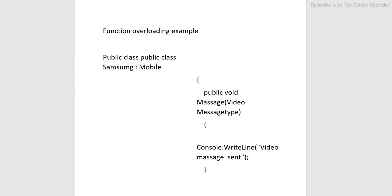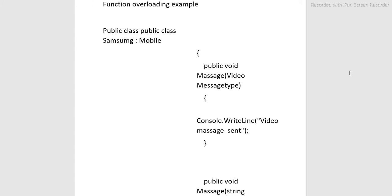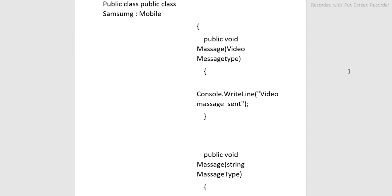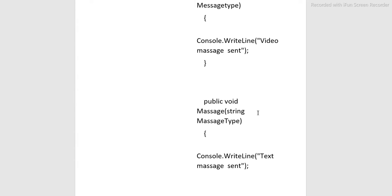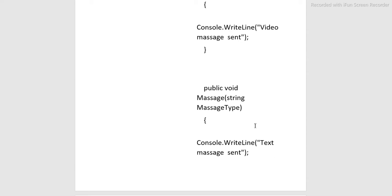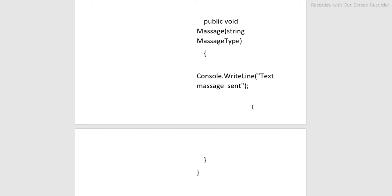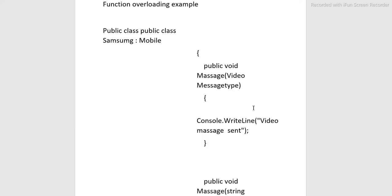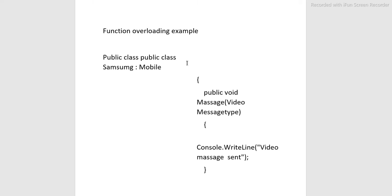Function overloading example. Public class SamsungMobile has two message methods. The first is public void message with video message type, which outputs 'video message send'. The second is public void message with a string message type, which outputs 'text message send'. So basically, this is overloading.